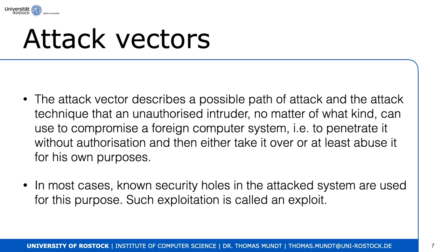An attack vector describes a possible path of attack and the technique an unauthorized intruder can use to compromise a foreign computer system — for instance, to penetrate it without authorization and either take it over or abuse it for their own purposes, such as switching lights on. Known security holes in the attacked system are used for this purpose; such exploitation is called an exploit — something an attacker uses to gain access to the system.